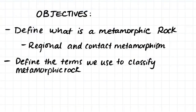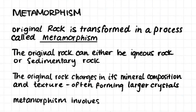The objective of this video is to define what a metamorphic rock is. First we will look at what regional and contact metamorphism is, and then we will define the terms we use to classify different types of metamorphic rock. Metamorphic rock forms when original rock is transformed in a process called metamorphism. This original rock can either be igneous rock or sedimentary rock, and it will change in its mineral composition and texture.